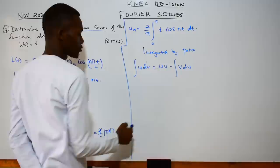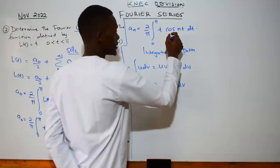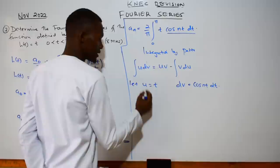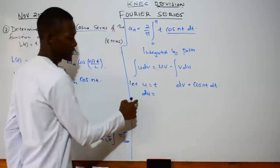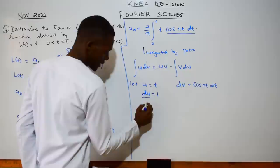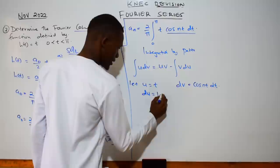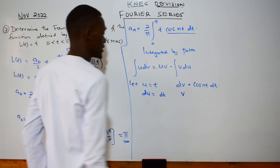We let u = t and dv = cos(nt) dt. Then du is found by differentiating u: du/dt = 1, so du = dt. To find v, we integrate dv: the integral of cos(nt) gives sin(nt), and we divide by the constant n. So v = sin(nt)/n. Now we have all the pieces: u, v, dv, and du.